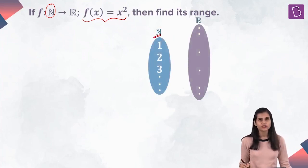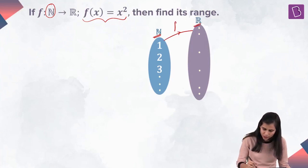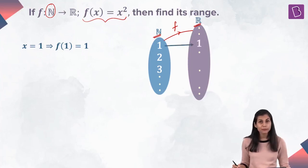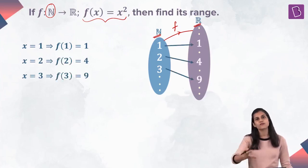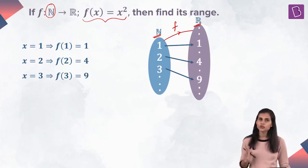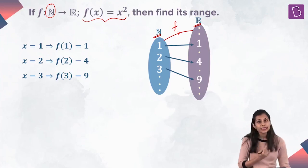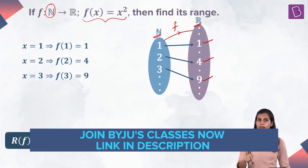Natural numbers happen to be a discrete set, so let's use the arrow diagram approach. My first set is the set of naturals — 1, 2, 3, 4, and so on. The second set, my co-domain, is the set of all reals. f maps from this domain to this co-domain. 1² = 1, so 1 gets mapped to 1. 2² = 4, so 2 gets mapped to 4. 3² = 9, so 3 gets mapped to 9. Then 4 gets mapped to 16, and so on. The images are 1, 4, 9, 16, 25, and so on — all natural numbers which are perfect squares.